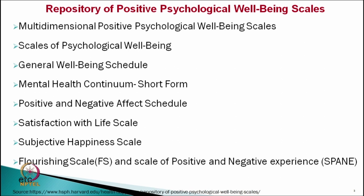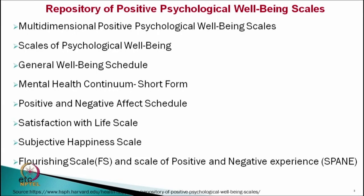We can identify some of these psychological tests like multidimensional positive psychological well-being scales, scales for psychological well-being. All these scales are based on a particular theory, and then they define the operational definitions taken in this psychological test and decide the factors under it. Similarly, there is the general well-being schedule, mental health continuum, positive and negative affect schedule, satisfaction with life scale, subjective happiness scale, flourishing scale, and scale for positive and negative experiences.